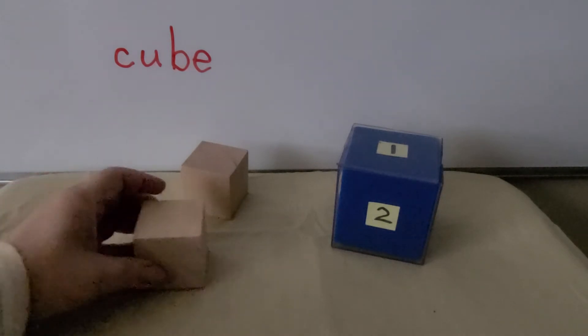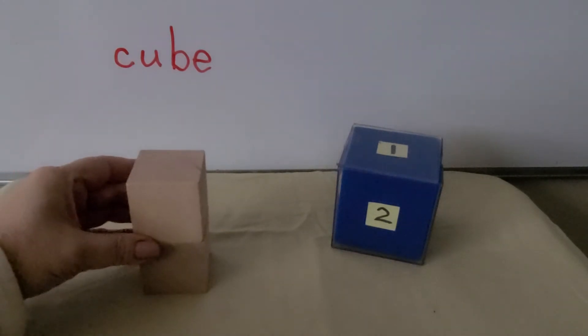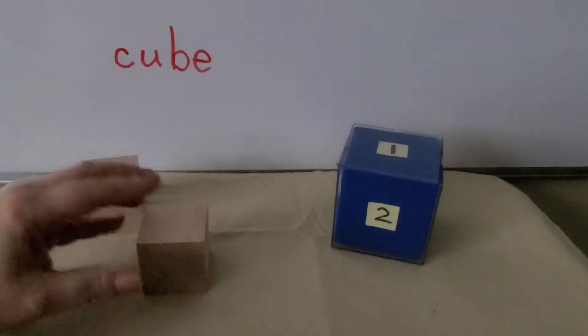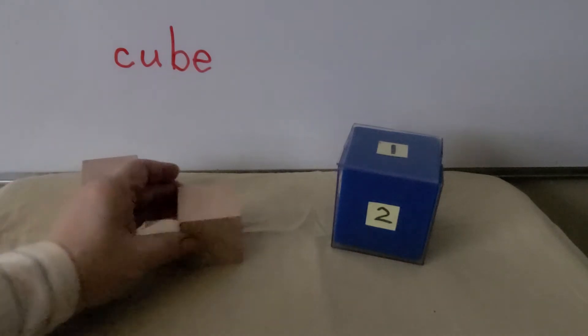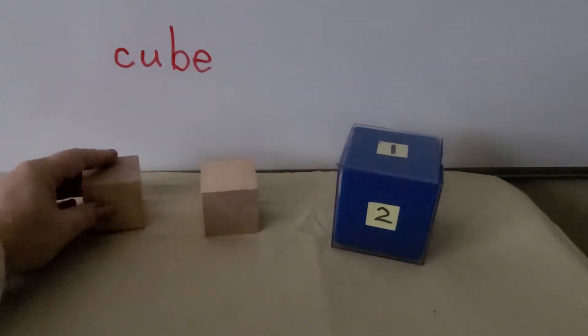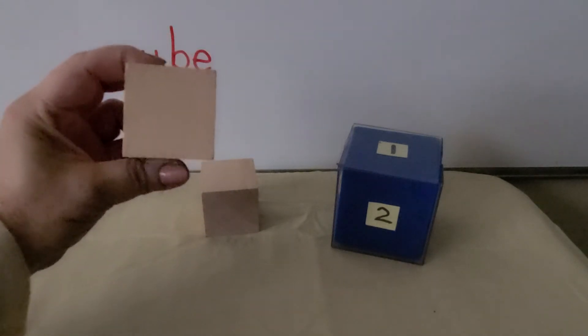We can stack cubes to make a tower, and a cube can slide on one of its flat surfaces. A cube has six flat surfaces that are shaped like squares.